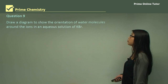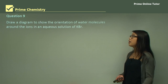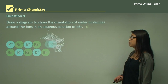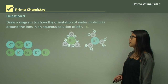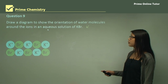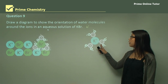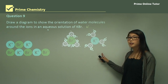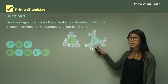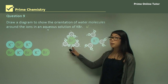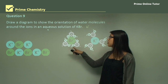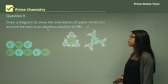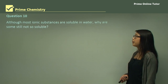Question: draw a diagram showing the orientation of water molecules around the ions in an aqueous solution of potassium bromide. When water pulls away potassium (positive), the negatively charged oxygen atoms of water surround the potassium ion with oxygens pointing inward. For bromide (negative), the positively charged hydrogen atoms of water are attracted to it and surround it instead.